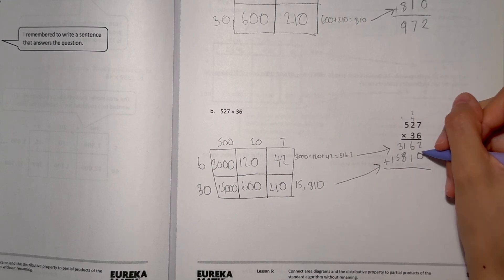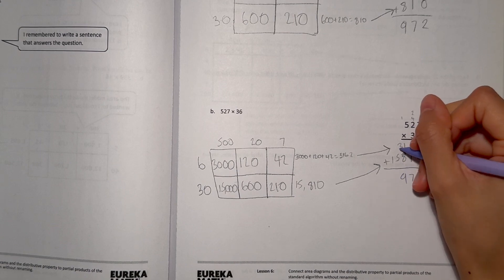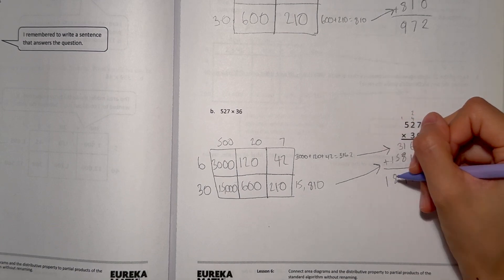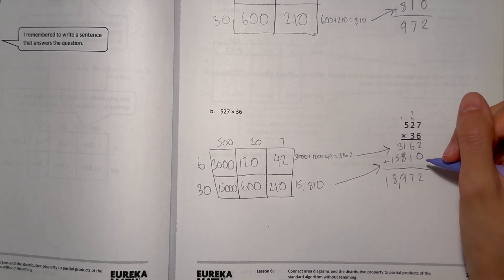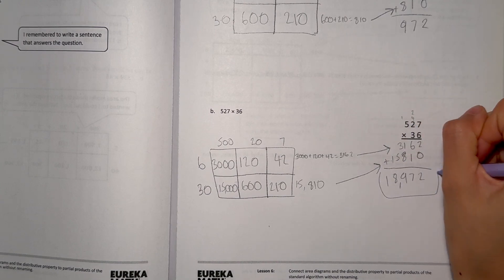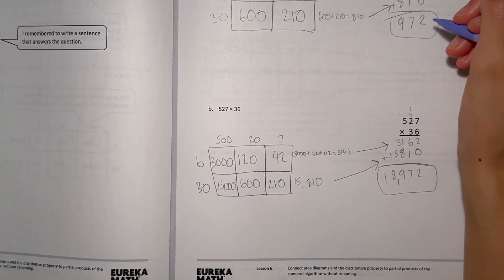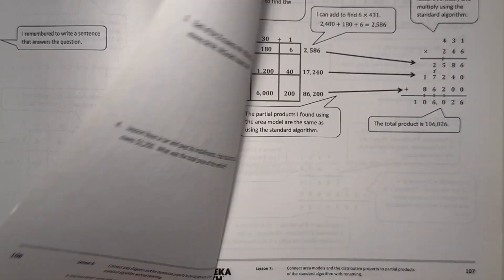Now let's add. 2 plus 0 is 2. 6 plus 1 is 7. 1 plus 8 is 9. 3 plus 5 is 8. And 1 is just 1. So our answer would be 18,972. Let me go slow and circle our answer.